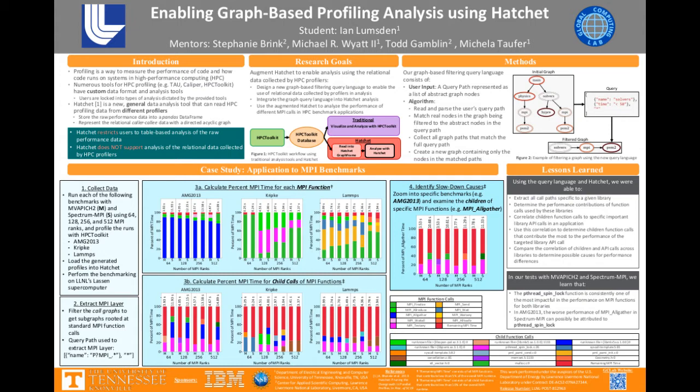After implementing this query language, I performed a case study to show both the new analysis capabilities the query language provides, and to locate potential root causes for performance differences in applications. More specifically, I examined the performance of the Mvapich and Spectrum MPI libraries in the AMG 2013, Kripke, and LAMPS benchmarks. I ran each of these benchmarks with both MPI libraries, using 64, 128, 256, and 512 MPI ranks, and I profiled all of these runs using HPCToolkit.